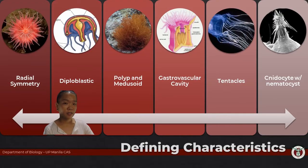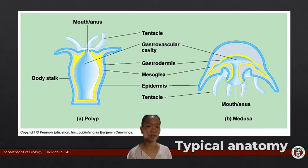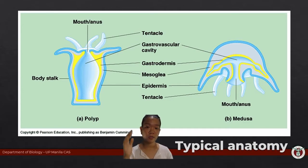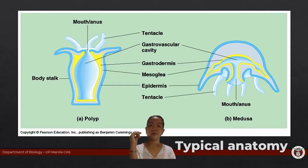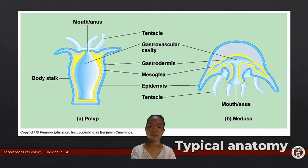When we say cnidarians are diploblastic, that means they have two main tissue layers: the innermost gastrodermis and the outermost epidermis. Cnidarians also exhibit two main body forms: the polyp form and the medusa form.